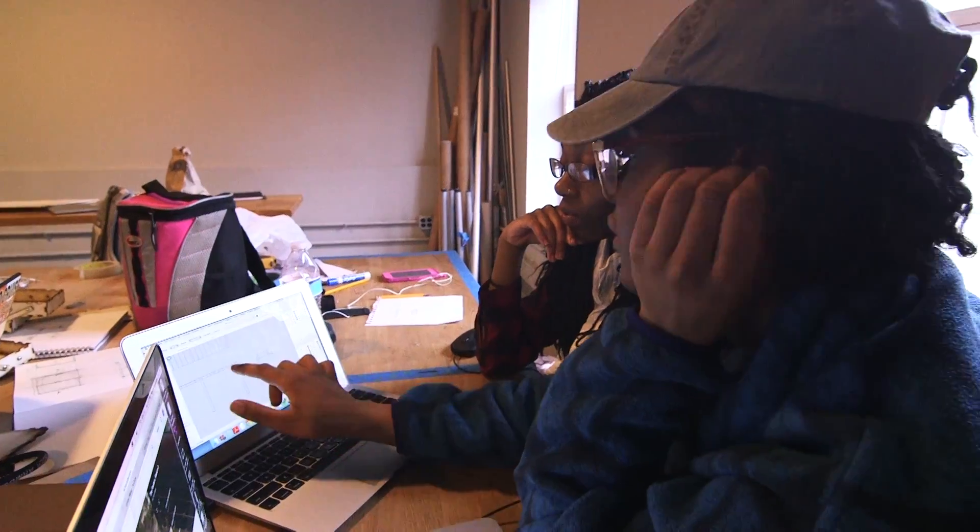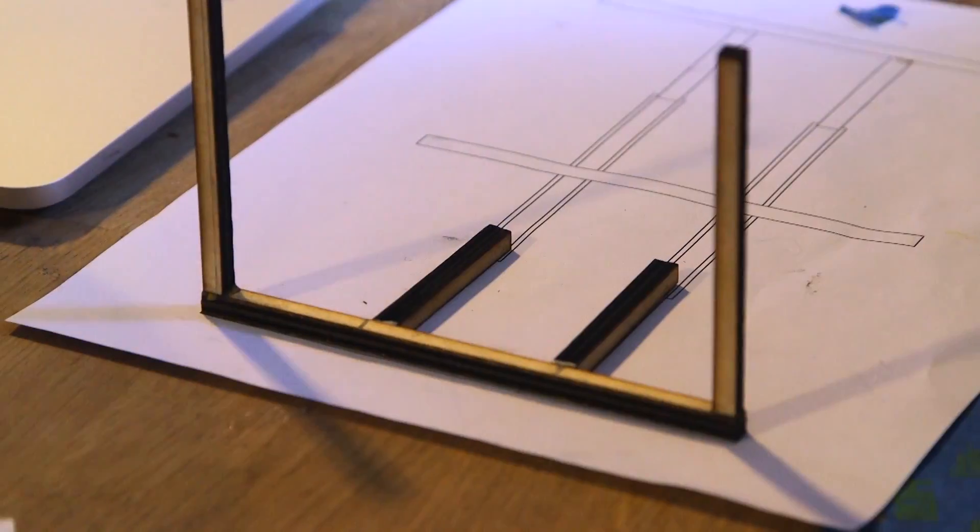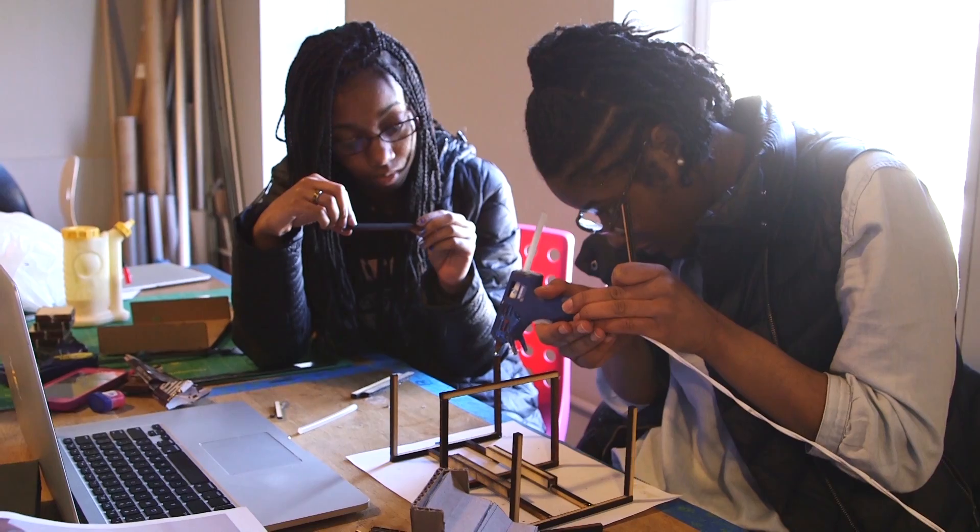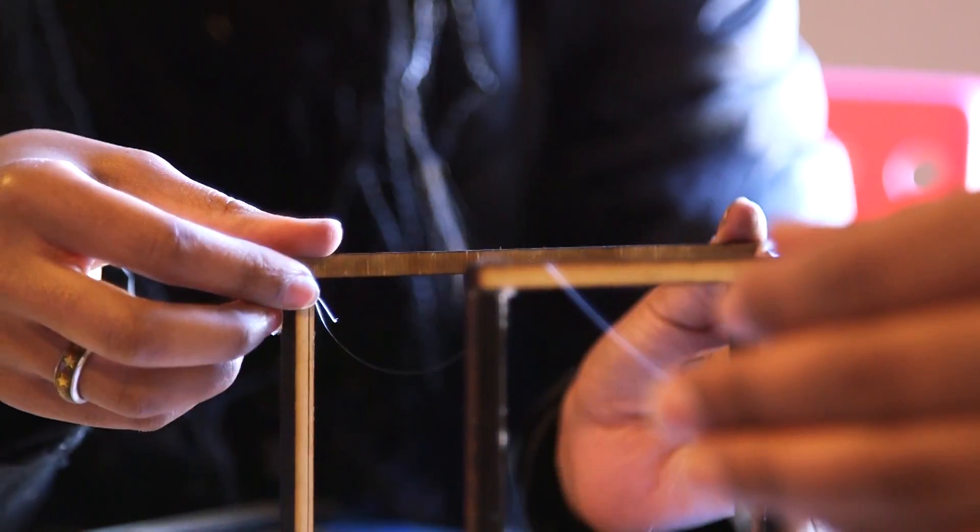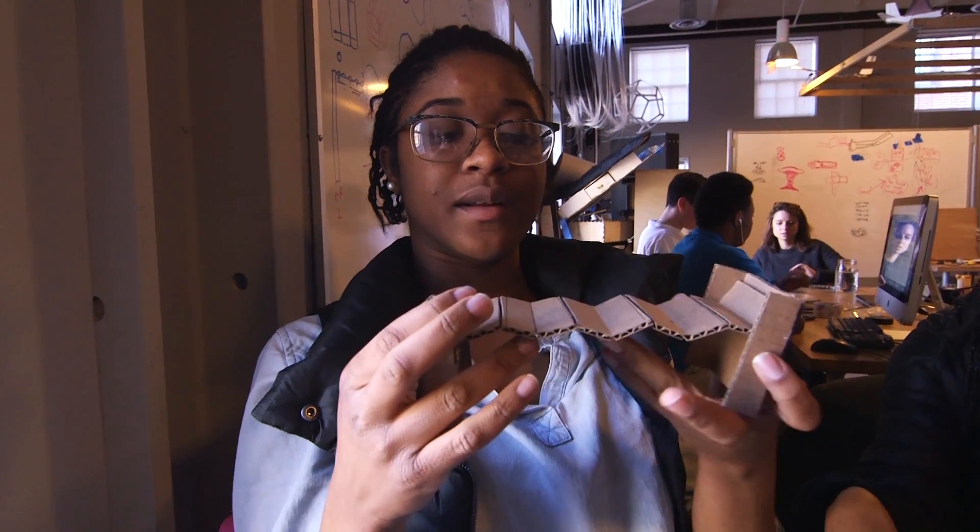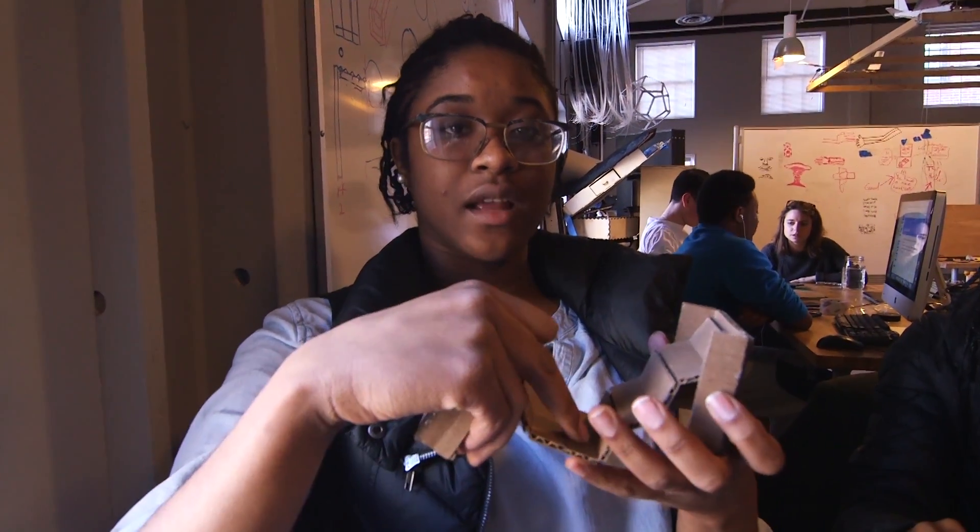Sometimes when we build a 3D model it shows us that there are problems with our design. That's when we go back to 2D and change our sketches, and then we make a new 3D model to see if that one works. We realized that there wasn't going to be enough support on the table if we didn't put something right here, the table would kind of just sink in.